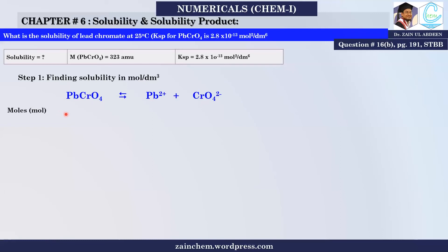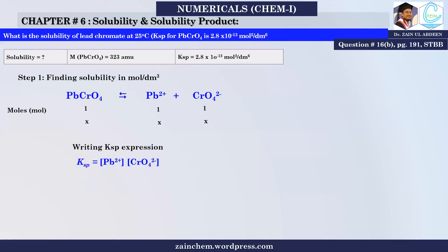Now I look at the mole ratio. Lead Chromate and Chromate are in 1:1 mole ratio. If there are x moles of Lead Chromate, then Lead ion and Chromate ion are each x moles. Now I write the KSP expression — the ionic product — as the product of concentrations of both ions in terms of x.